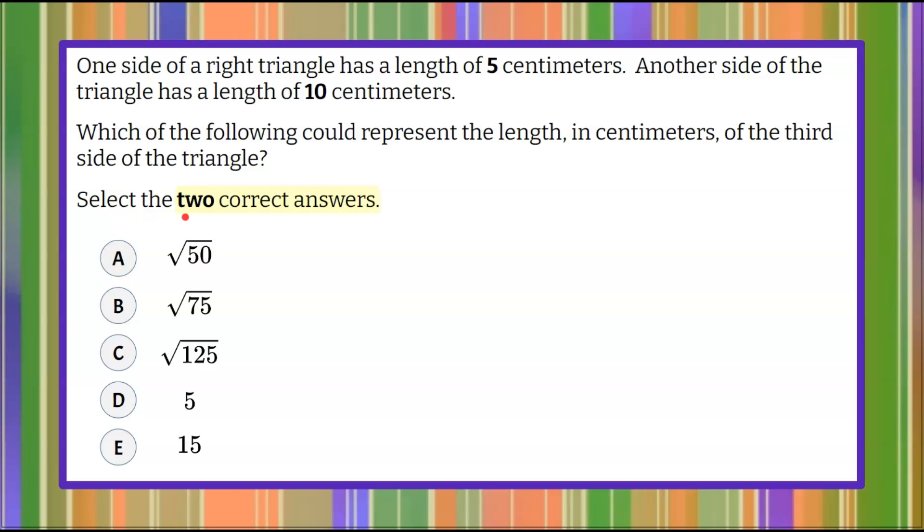Welcome back. We're going to find the two correct answers from these five answer choices. We are given the information that we have a right triangle. So a right triangle has one 90-degree angle, identified by this box. They meet perpendicularly. It forms a 90-degree angle. So we know that we have one side that's 5 centimeters, so I'm going to take the shortest side of my drawn triangle and label it 5. We're told that the other side or another side of the triangle has a length of 10 centimeters, so 5 and 10.